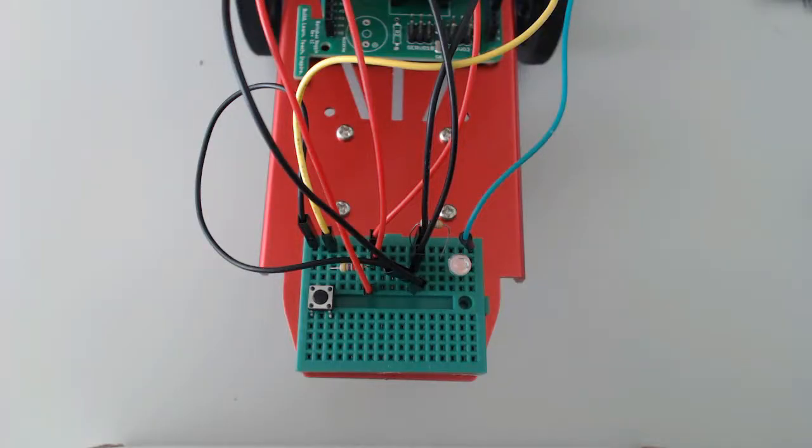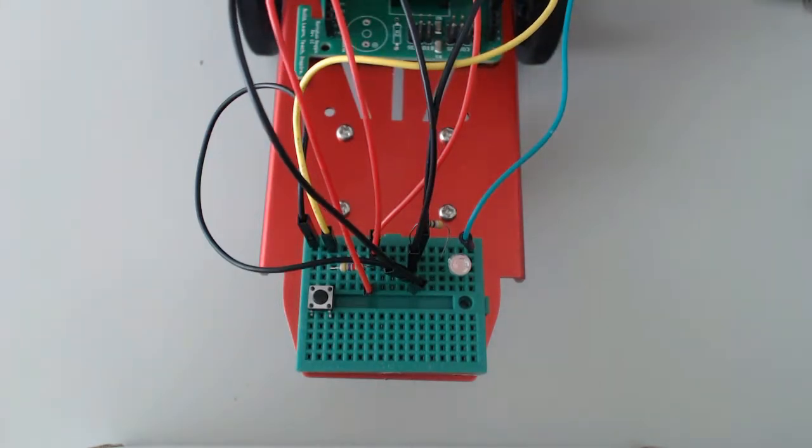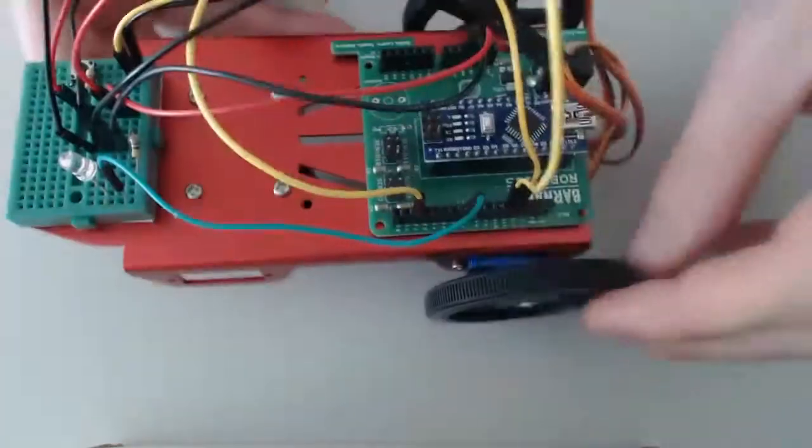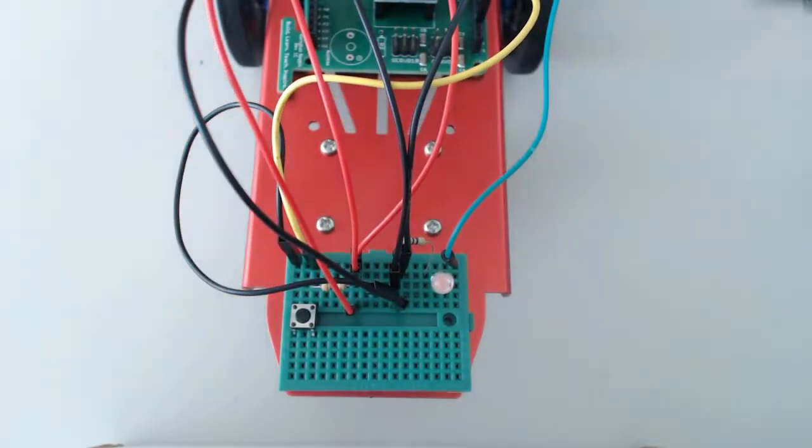As you can see on my Barnabas racer, I have the servo motors wired up through the breadboard. The ground and power wires go into the breadboard with the signal wires going into pins 10 and 11 on the Barnabas noggin.